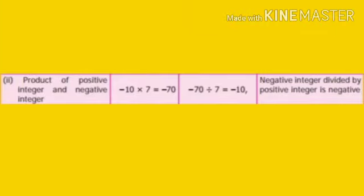Now let us see what happens if one of the integers is negative and the other is positive. In the number converter, minus 10 into 7 is equal to minus 70. If we divide the product minus 70 by 7, we get minus 10 — the sign changes, giving a negative integer. When we divide minus 70 by minus 10, we get plus 7. When we divide two integers of the same sign, we get a positive integer.